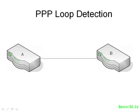PPP loop detection. Here we have router A and B. They're connected via a serial connection, and we're running PPP as the Layer 2 data encapsulation method. Normally, router B will transmit some data, and it will also receive some data from router A. This is normal behavior.